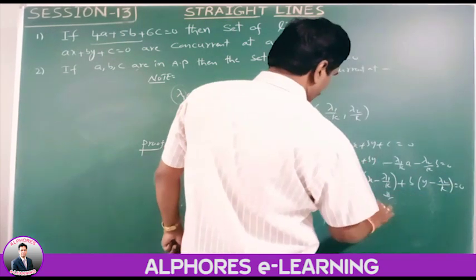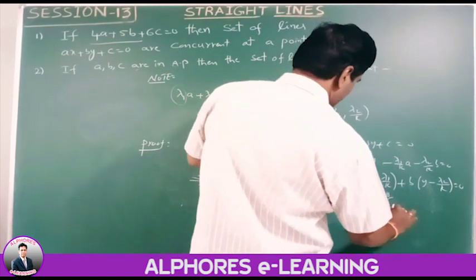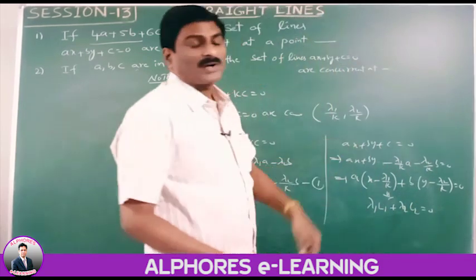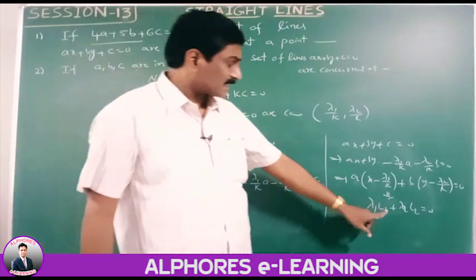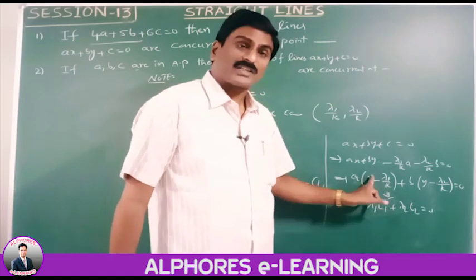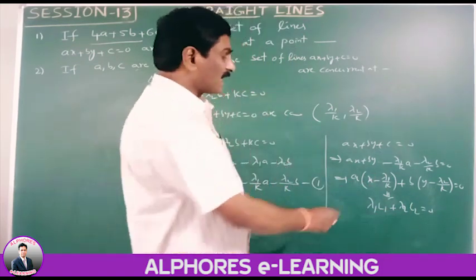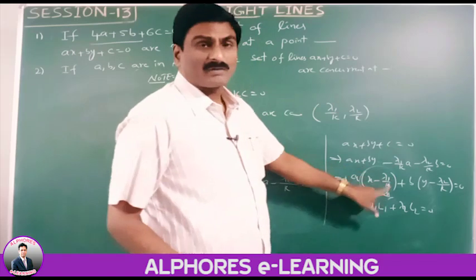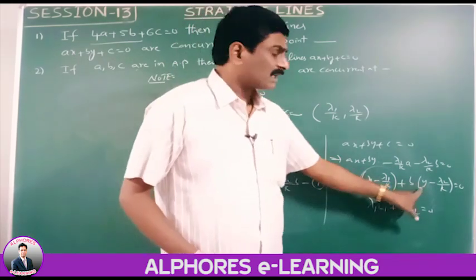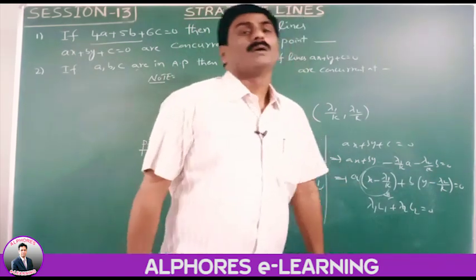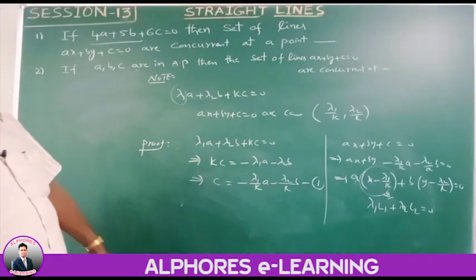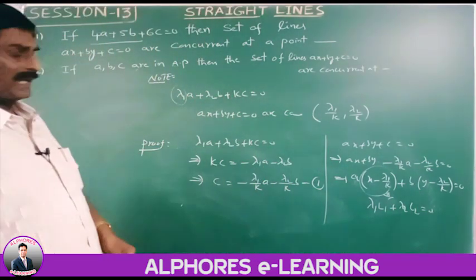This is in the form of lambda-1·l1 plus lambda-2·l2 equals 0 — the family of concurrent lines. The point of concurrency is the intersection of l1=0 and l2=0. From l1: x minus lambda-1/k equals 0, so x equals lambda-1/k; and y equals lambda-2/k. Therefore the point of concurrency is (lambda-1/k, lambda-2/k).